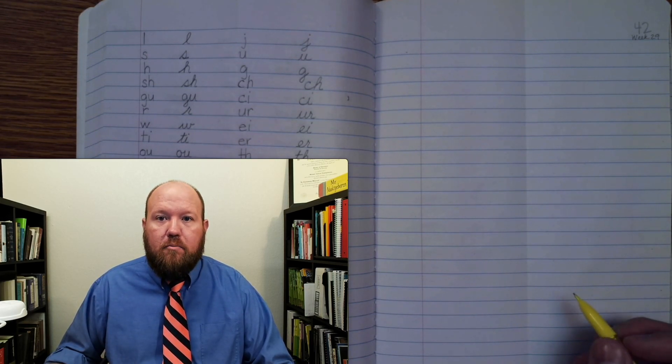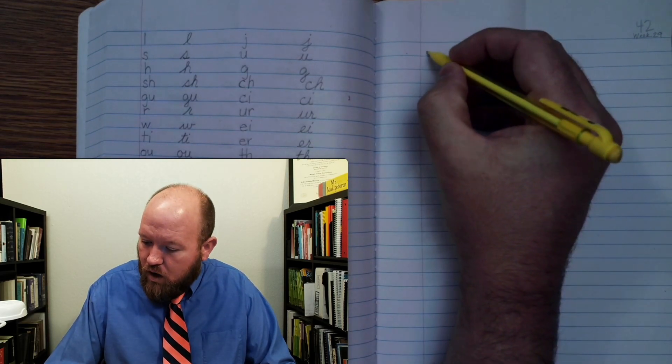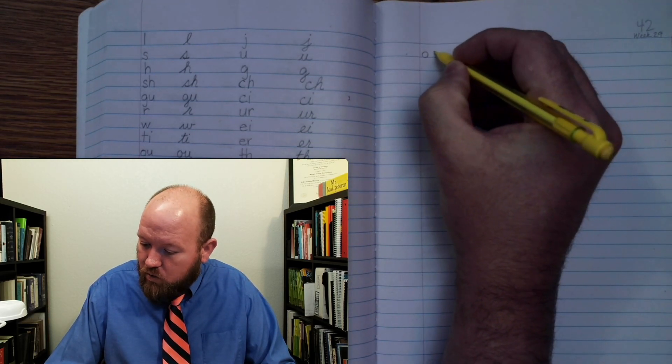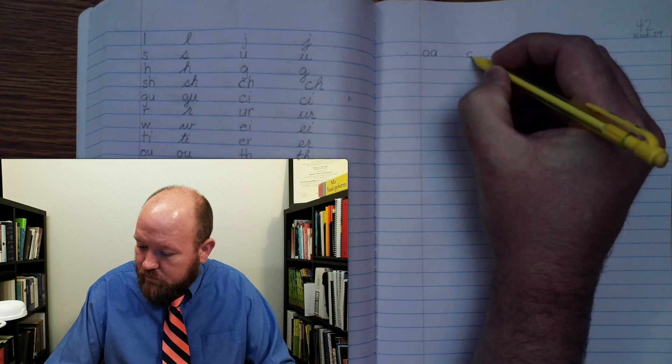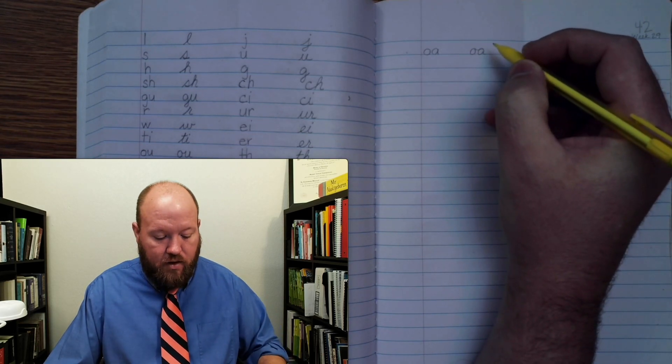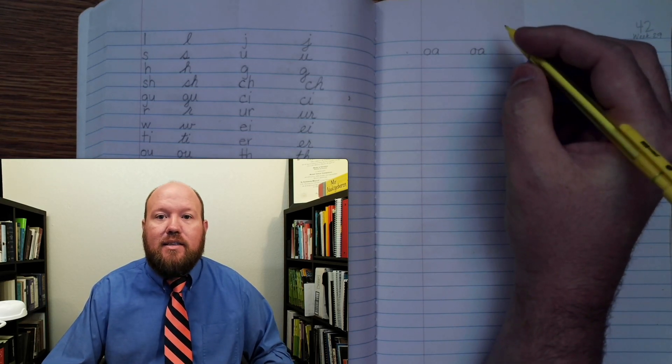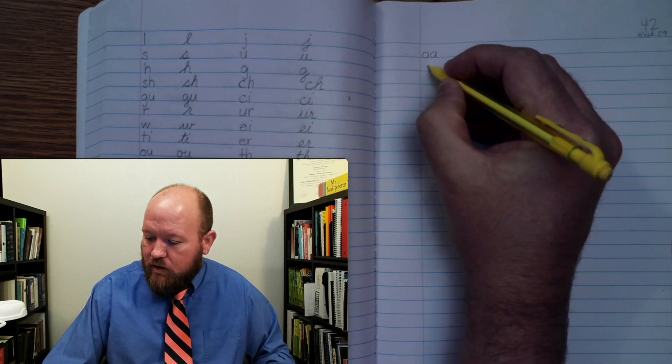The first one: O, boat. O, boat. Next one: K, t's. K, t's.